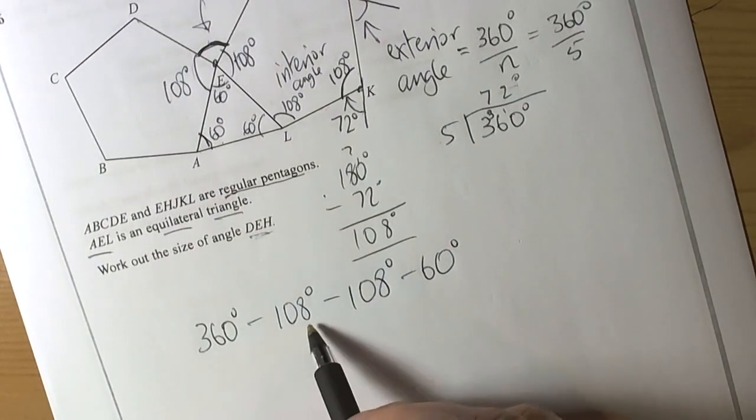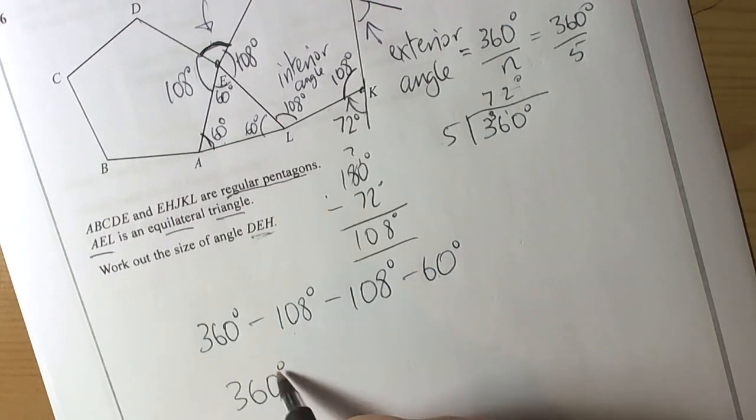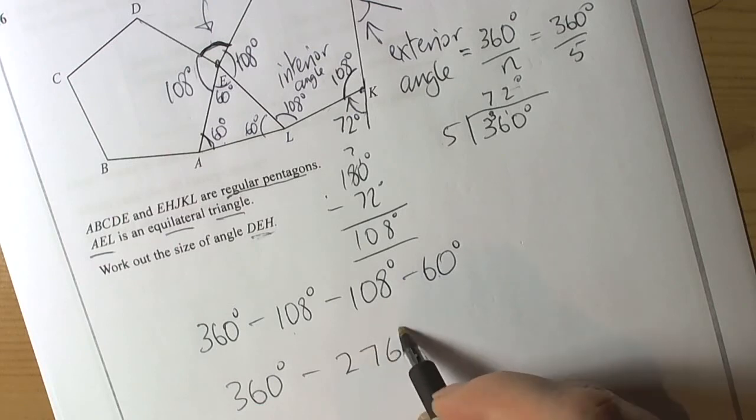We can find this angle by doing 360 degrees minus 108 degrees minus 108 degrees minus 60 degrees. 108 plus 108 is 216, plus 60 is 276. So we're going to end up doing 360 take away 276 degrees.